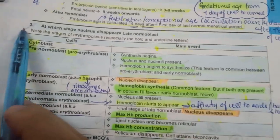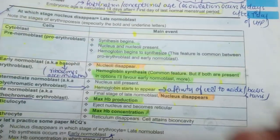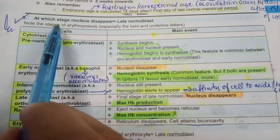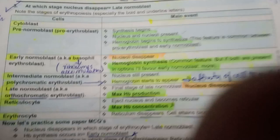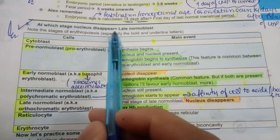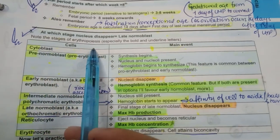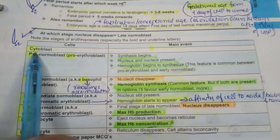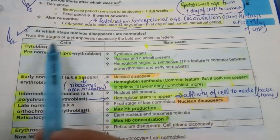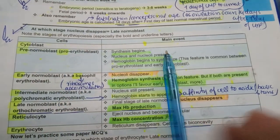Moving to point number 3: at which stage does the nucleus disappear in erythropoiesis? This has come as an MCQ from past papers. The answer is the late normoblast.